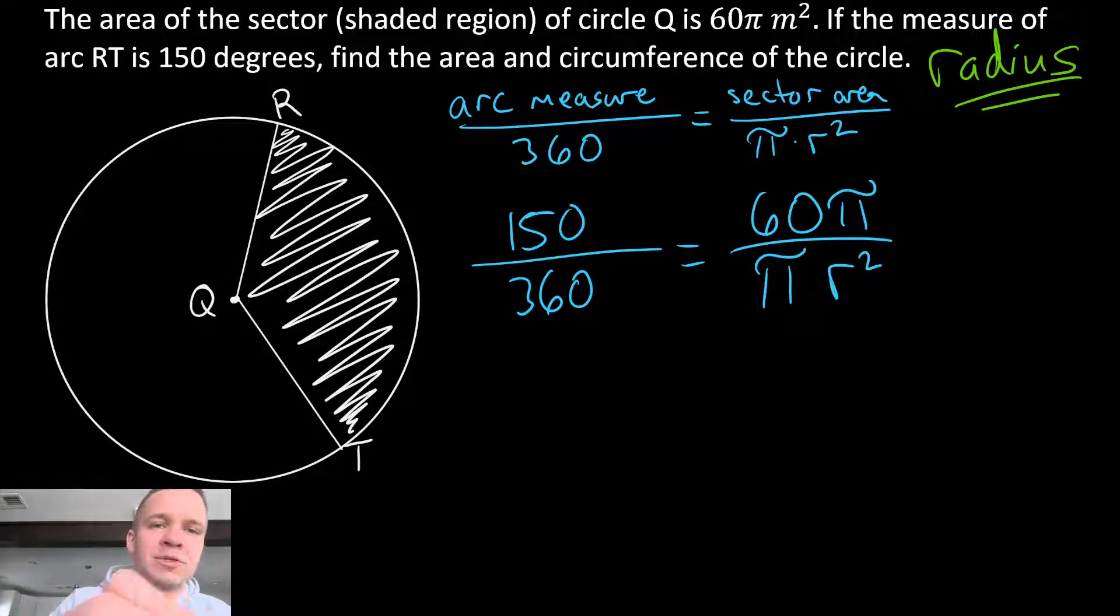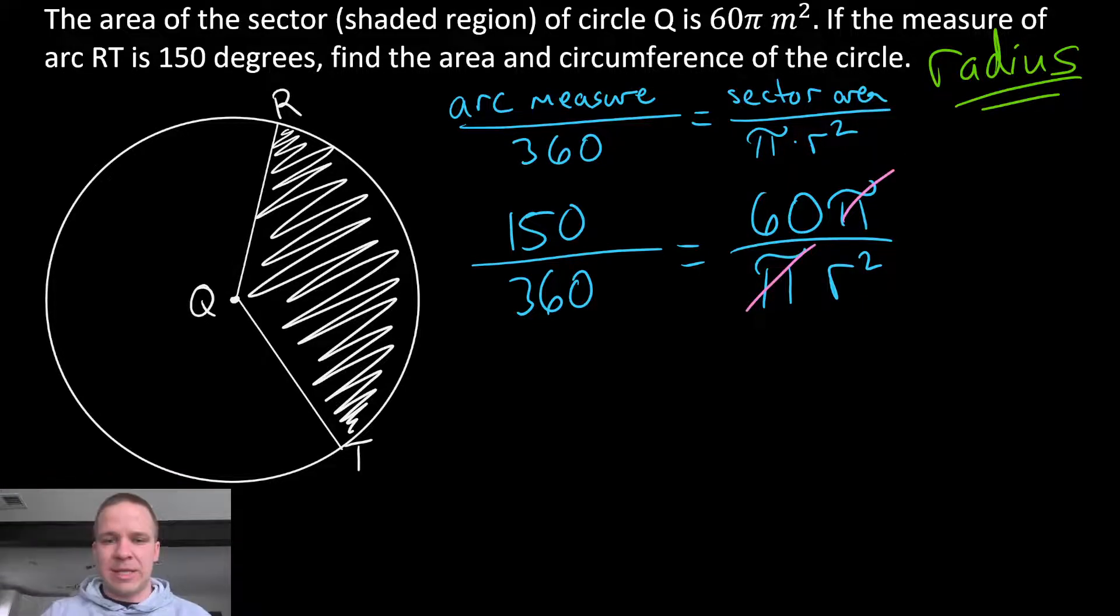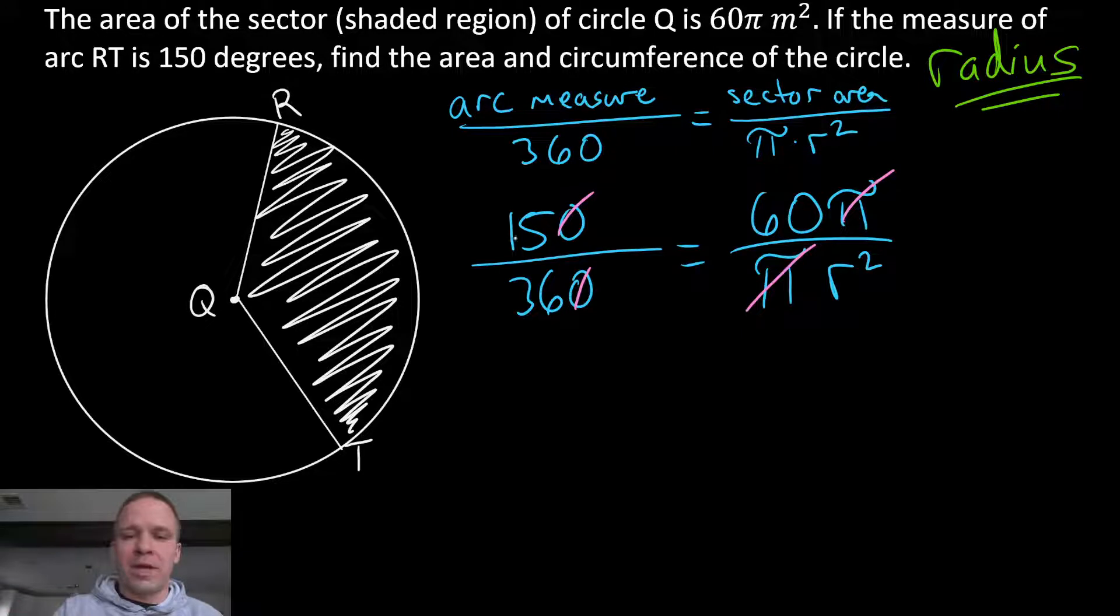So now I think some reducing is in order here before we cross multiply. My π's are gonna cancel out. I can reduce those down and they're actually both divisible by three, so this could become five and this divided by three would become 12. Now we're a little bit more manageable.